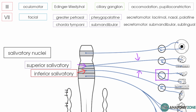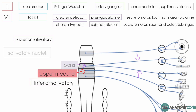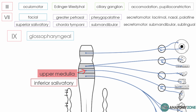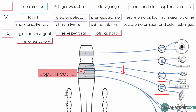The superior salivatory nucleus is located in the pons, while the inferior salivatory nucleus is located in the upper medulla and gives rise to the glossopharyngeal nerve. The lesser petrosal branch of the glossopharyngeal nerve extends to synapse in the otic ganglion, which provides postganglionic projections to the parotid gland.